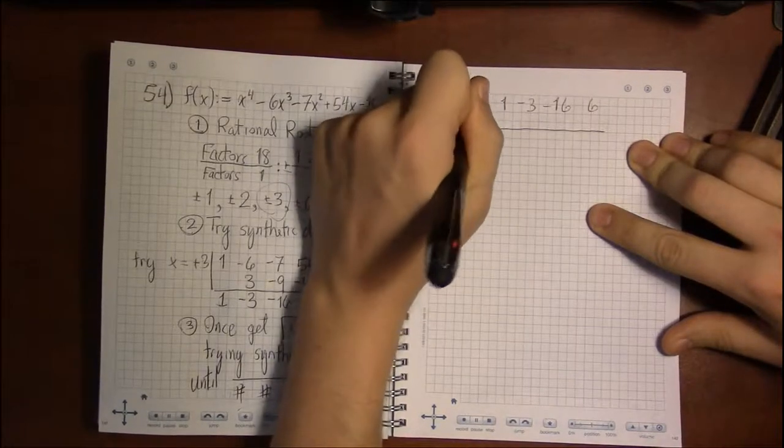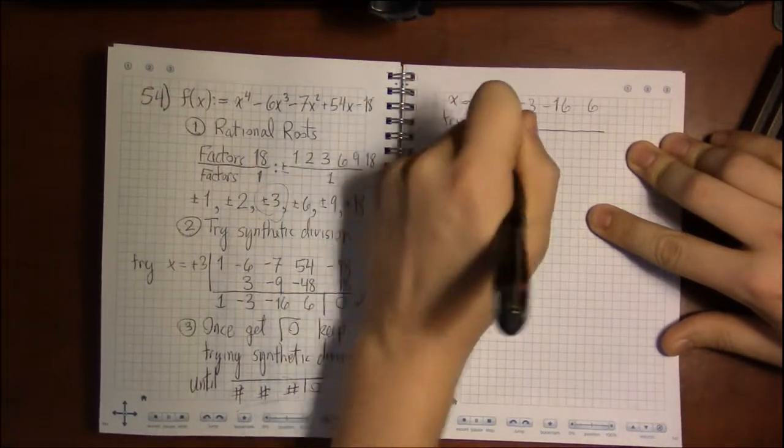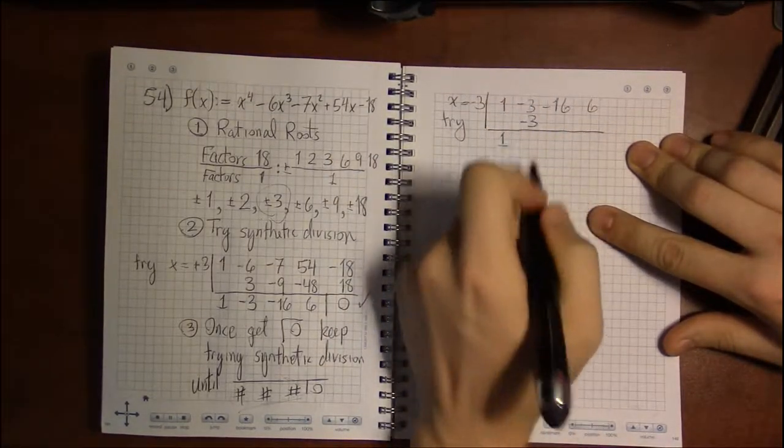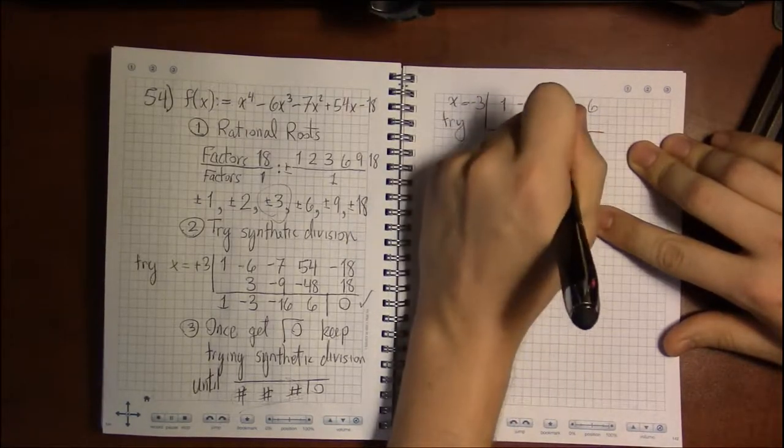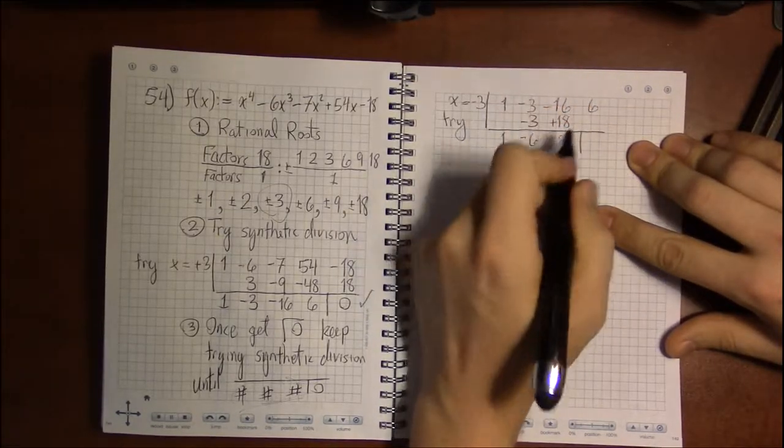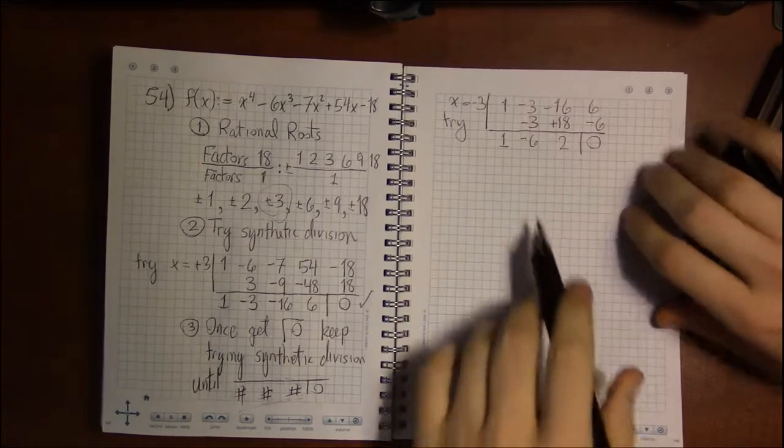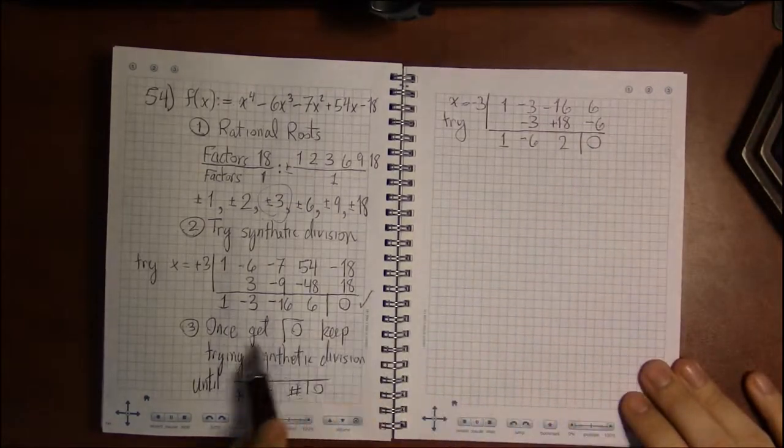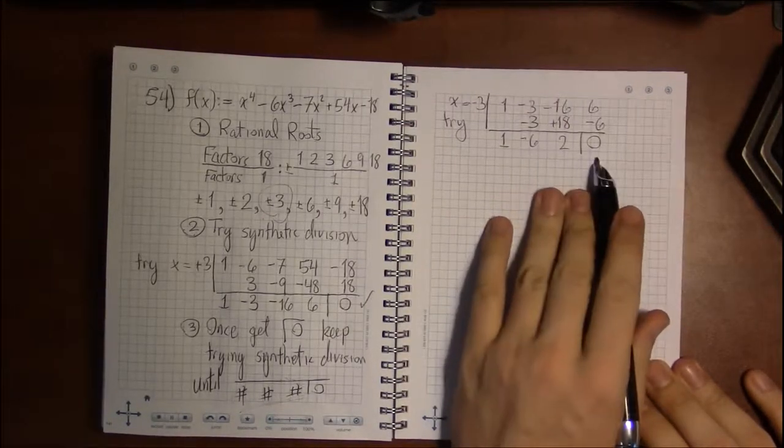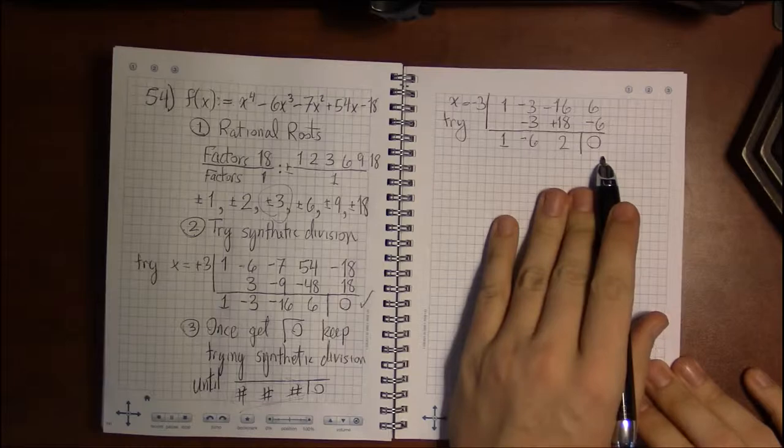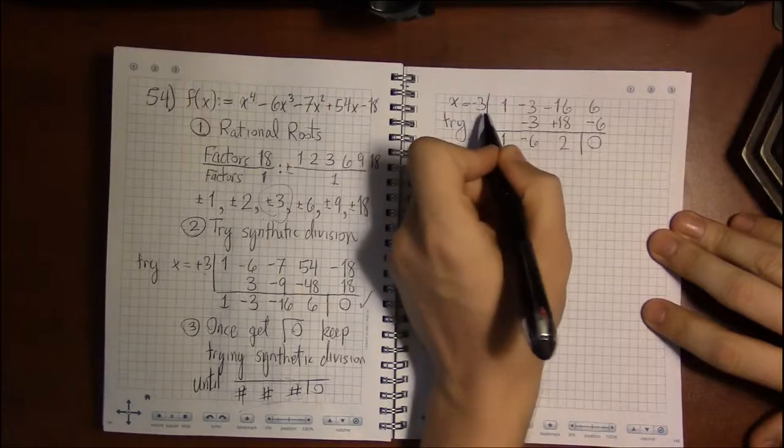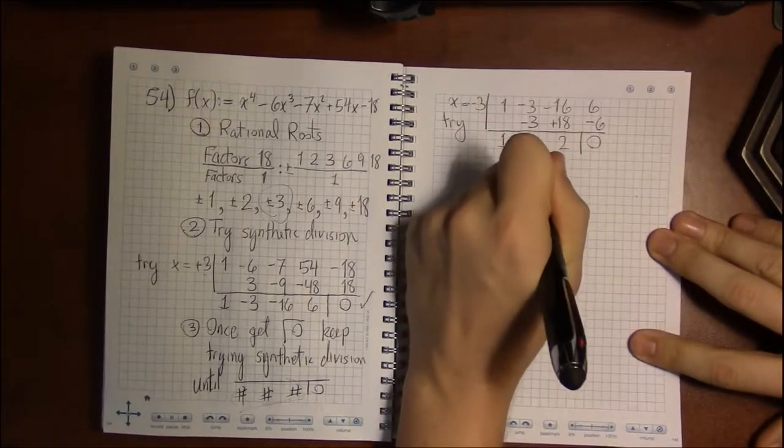I'm going to try x equals minus 3. Drop the 1. Multiply by minus 3 to get minus 3. Add to get minus 6. Multiply to get plus 18. Add to get 2. Multiply to get minus 6. And I get 0. Alright, I got 0. So I'm supposed to keep doing synthetic division until I reach 3 numbers and a 0. 1, 2, 3 numbers and a 0. I can stop synthetic division. Because what I have right here. I've pulled out 3, minus 3. And what I'm left with now is a quadratic.